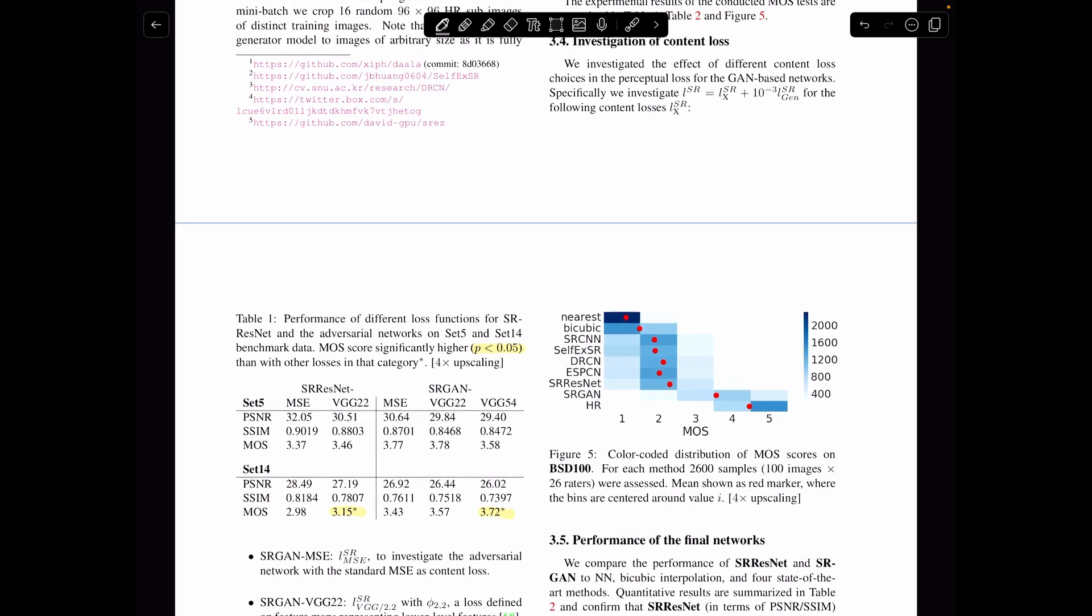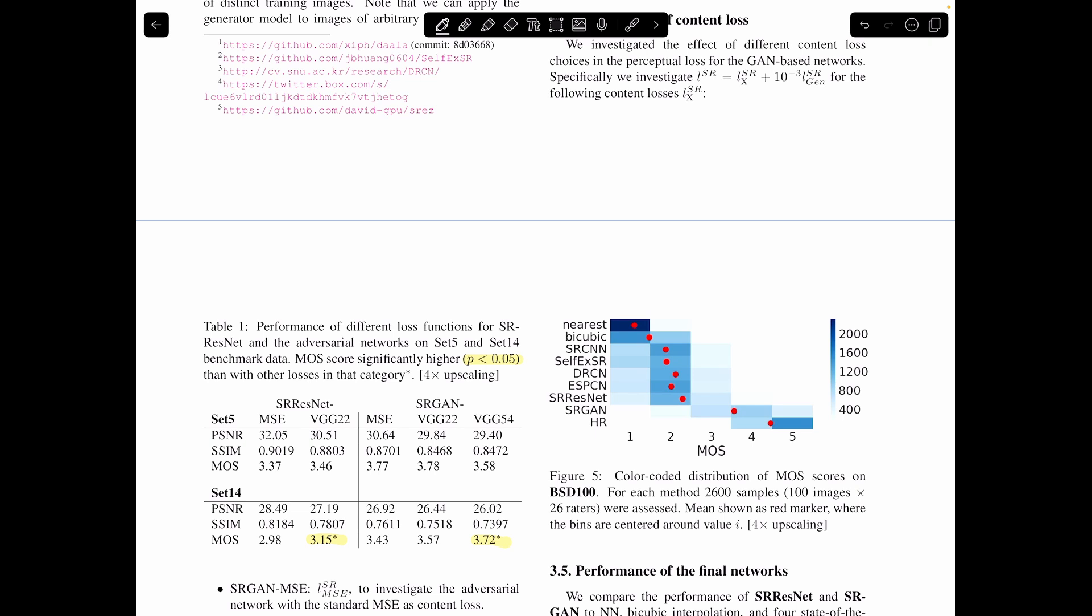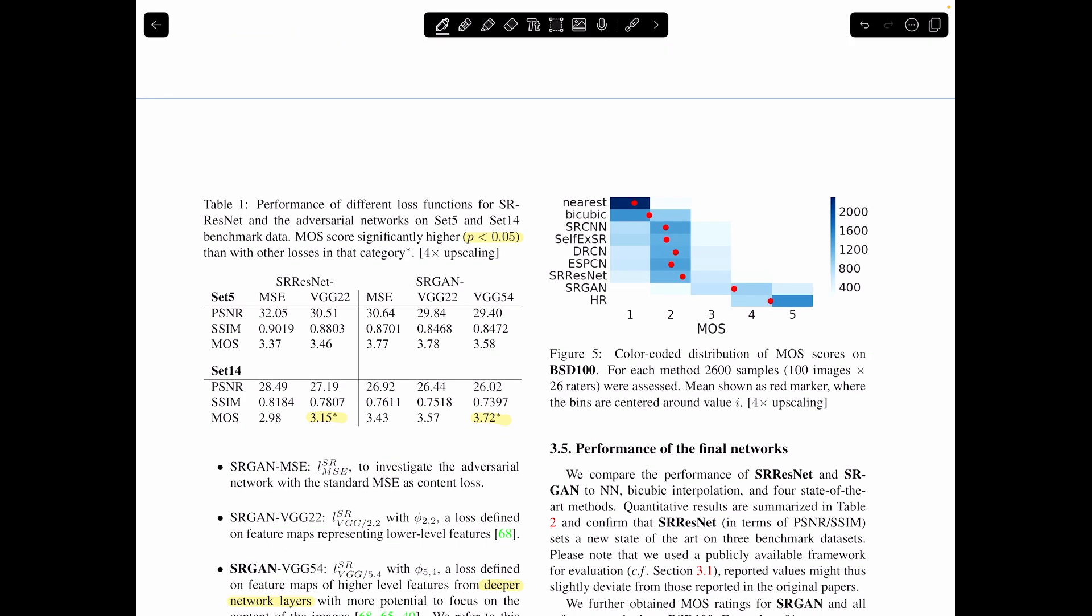So next they're going to investigate more in-depth their premise of this perceptual loss. And so they have Set5 here and Set14 which are data sets. And so they use their perceptual loss strategy on a ResNet and then a GAN. And so they have peaks signal-to-noise ratio, structural similarity, and so these are both just standard measures of the fidelity of an image. And then they have this mean opinion score rating. And what they did is they essentially showed these images to humans to quantify how appealing these images are. And so you can see that the VGG or perceptual loss outperforms on mean opinion score, which measures visual appealingness.